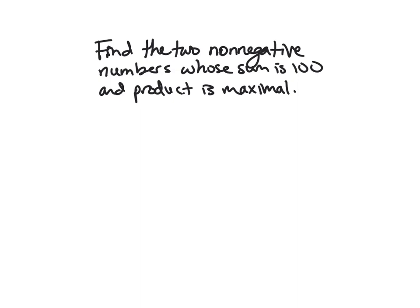So here we want to find the two non-negative numbers whose sum is 100 and product is maximal. So first thing we want to do, here a picture doesn't make a whole lot of sense, but we want to at least understand the problem and figure out what we're trying to maximize and minimize. And so we're trying to maximize the product of two numbers. And we are given the sum. We know that they add up to 100 and that both are at least greater than or equal to zero. They're not negative.